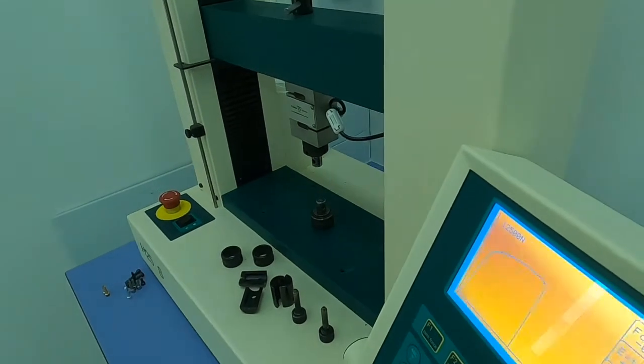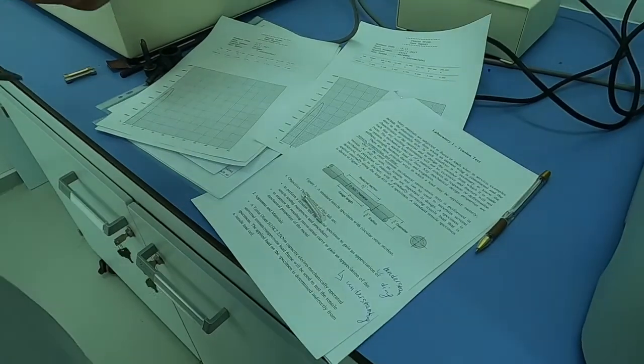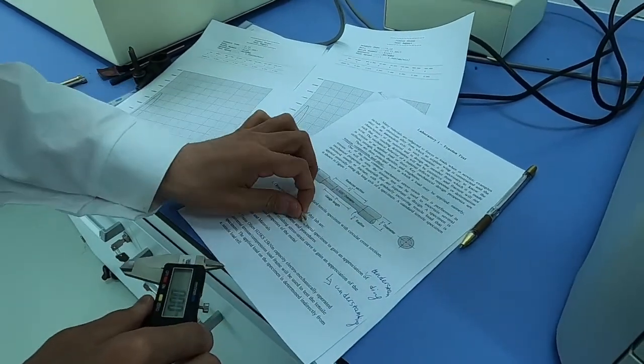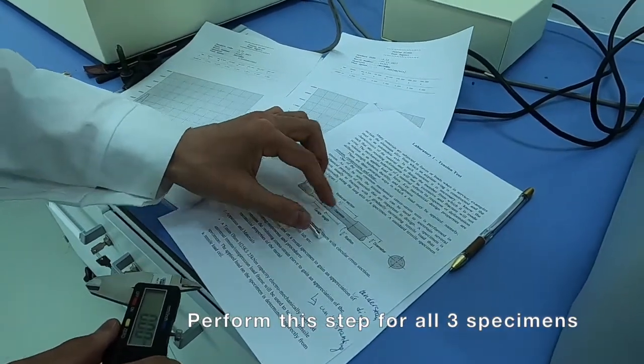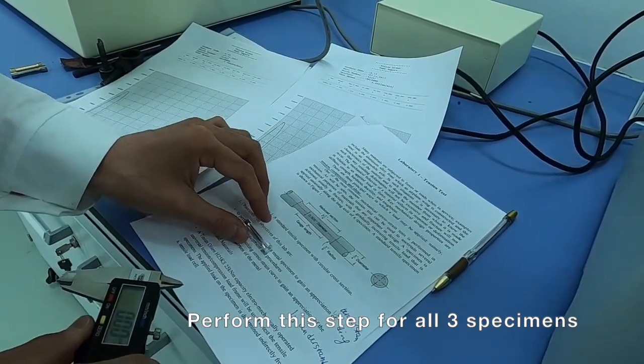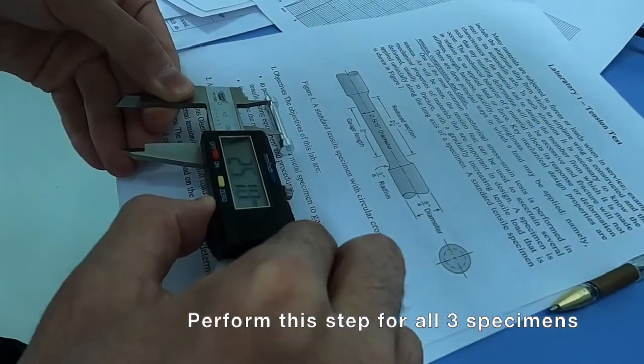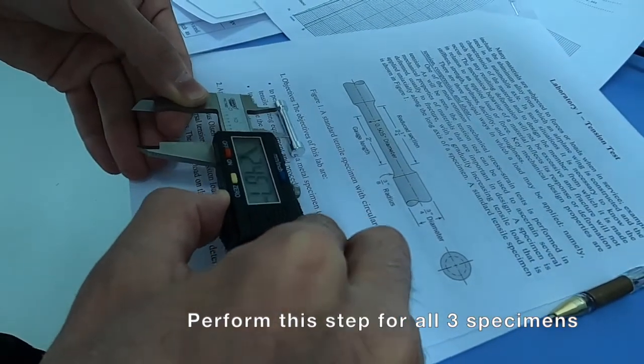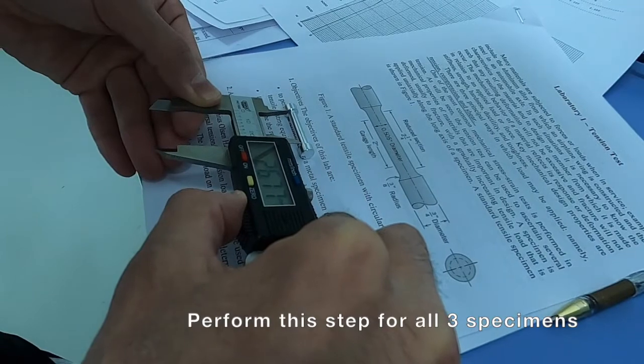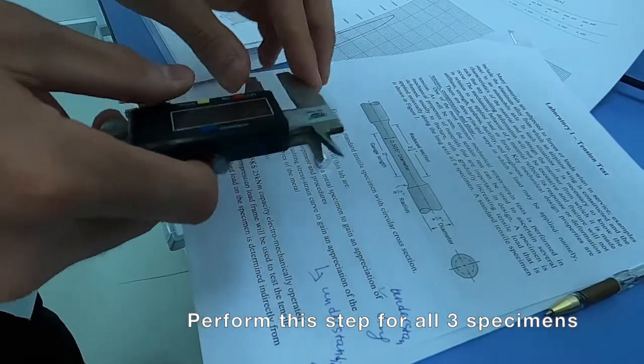Before starting the experiment, we have to take the measurement of the diameter of the specimen as in the picture and the gauge length. To do that we will use the caliper. This is our gauge length and diameter.